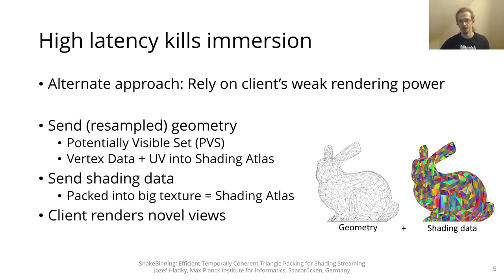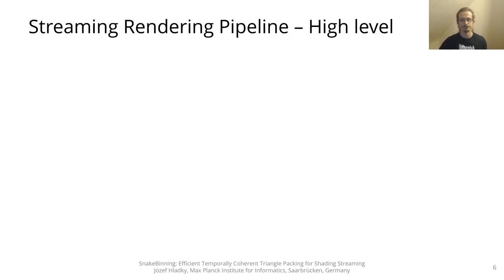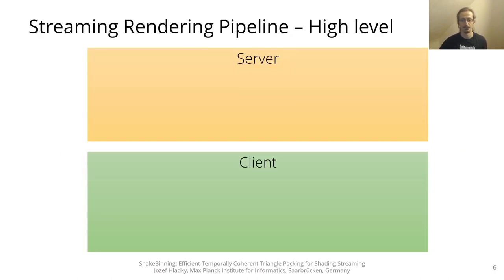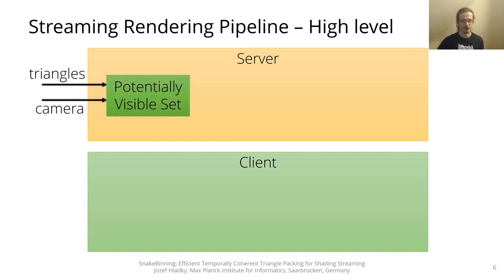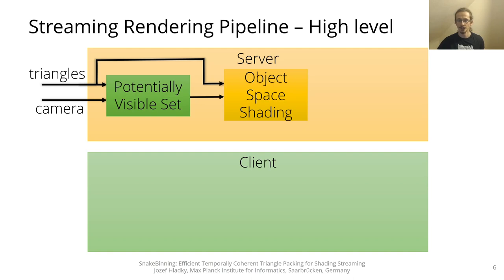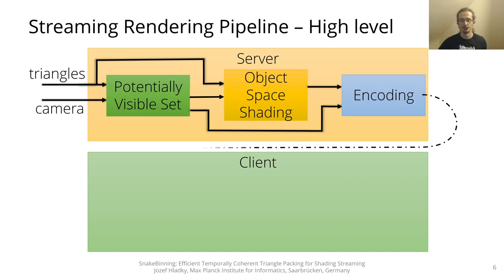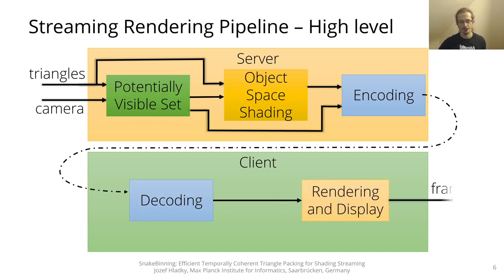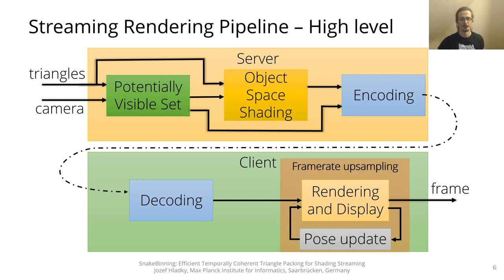To help hide the network latency, alternate pipeline designs emerge that rely on the client's weak rendering power. The server streams geometry to generate shading data, which is usually packed into a big texture atlas. The client then uses simple forward rendering to shade the geometry using the atlas texture and provide novel views. These streaming rendering pipelines first compute potentially visible set geometry, gather object space shading relative to this geometry, encode it into a package streamed to the client, and the client decodes the package and uses it for rendering frames, with the client's rendering frame rate decoupled from the server update frame rate.